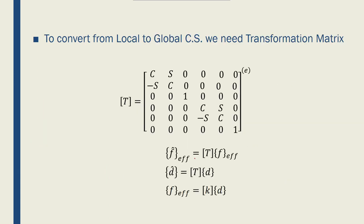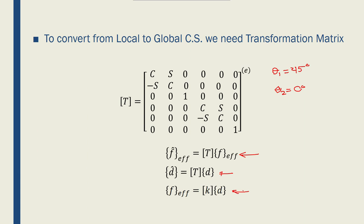To do that, we need to use the transformation matrix for each element. Element 1 is at 45 degrees, which we use to make the transformation matrix. Element 2 is at 0 degrees, which we use for the cosines and sines in its transformation matrix. Using that, we can convert the local effective nodal forces to global effective nodal forces, and also convert nodal displacements and nodal forces into the global forces.